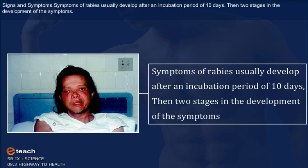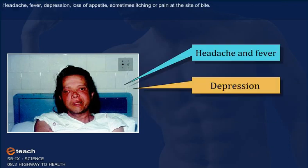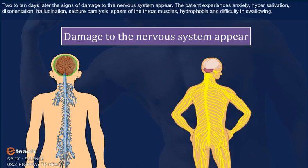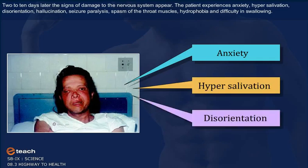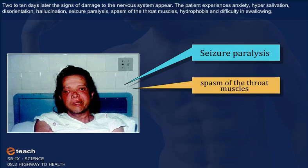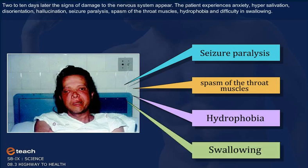First stage symptoms include headache, fever, depression, loss of appetite, and sometimes itching or pain at the site of the bite. Two to ten days later, signs of damage to the nervous system appear. The patient experiences anxiety, hypersalivation, disorientation, hallucination, seizure or paralysis, spasm of the throat muscles, hydrophobia and difficulty in swallowing.